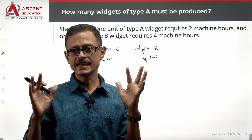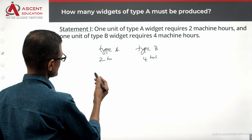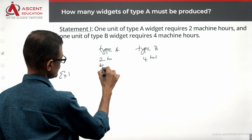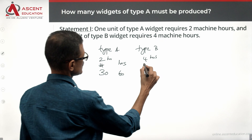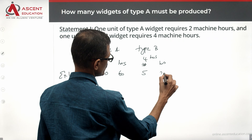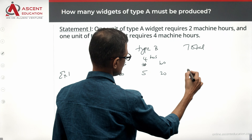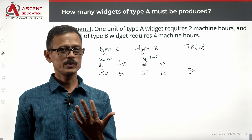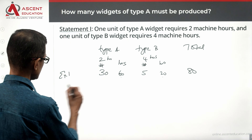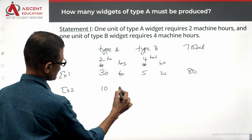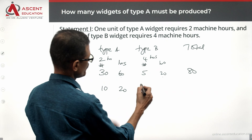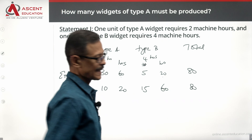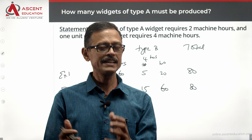For example, in example one: 30 units of type A will require 60 hours, and 5 units of type B will require 20 hours — total 80 machine hours, which works. In example two: 10 units of type A require 20 hours, and 15 units of type B require 60 hours — that also totals 80. Both combinations satisfy the constraint.